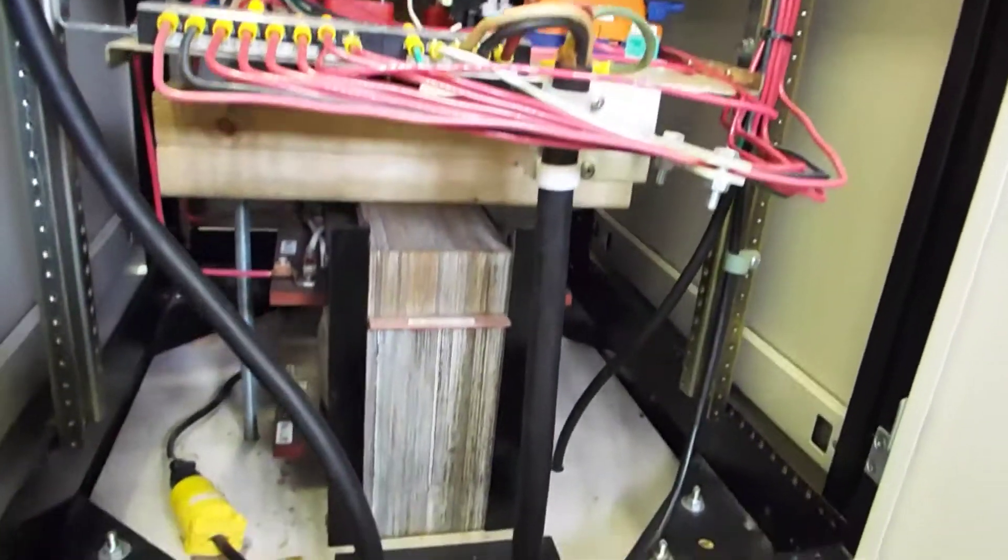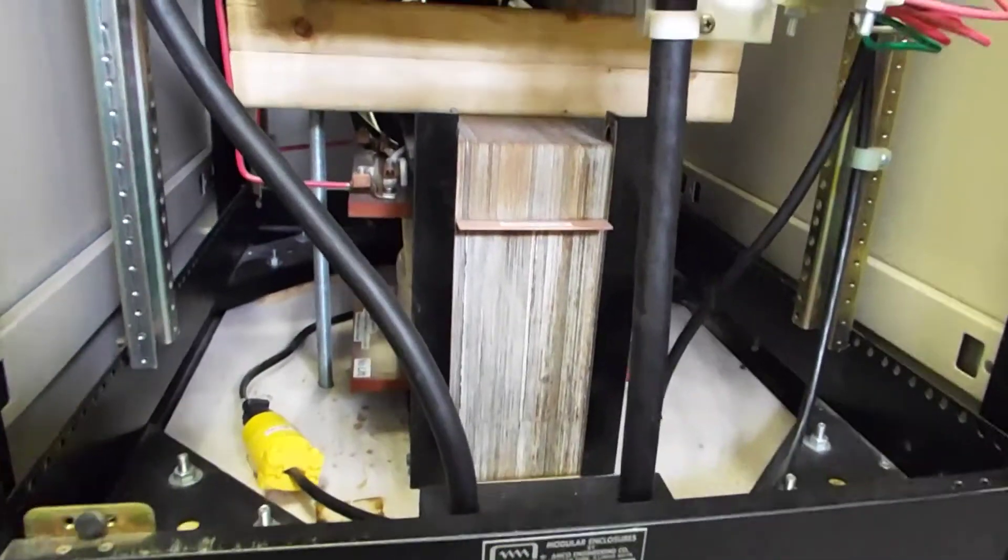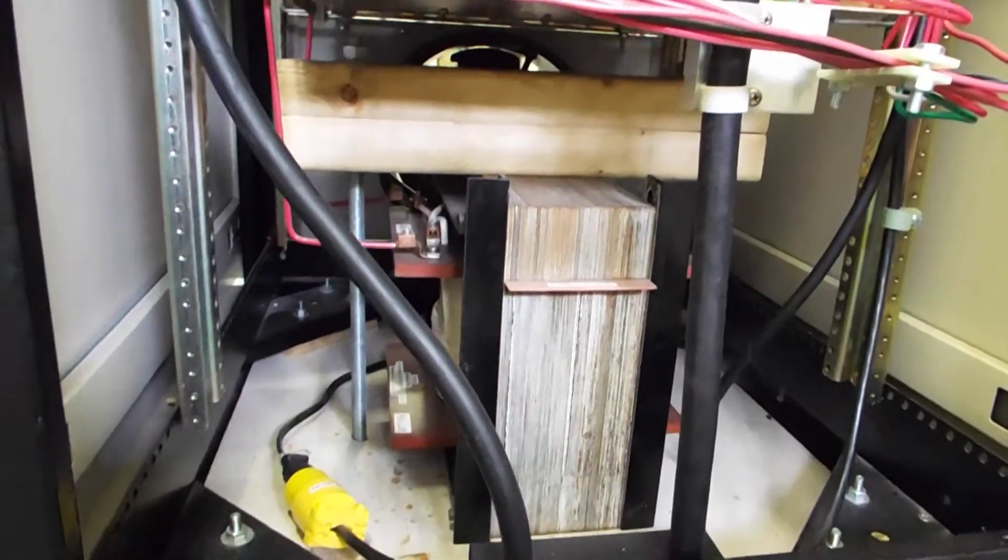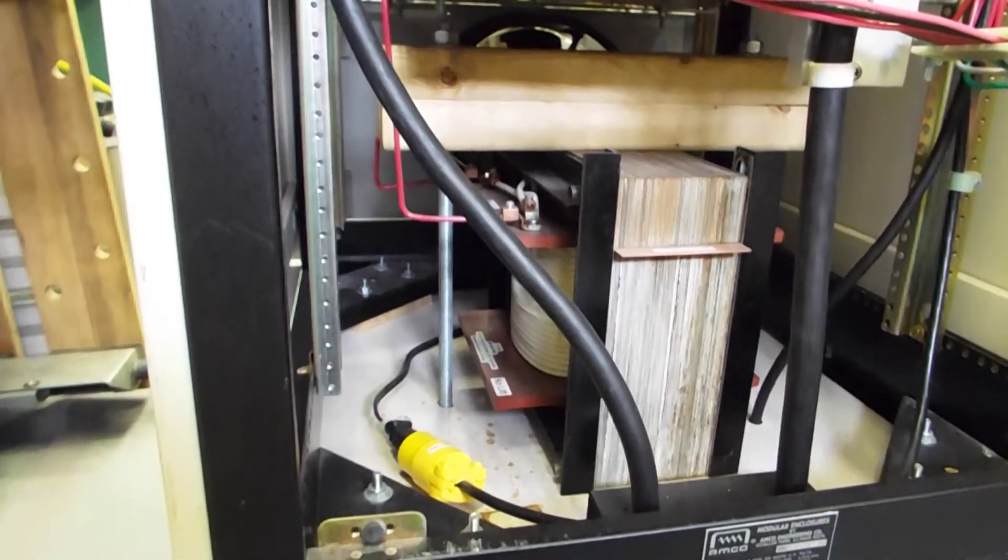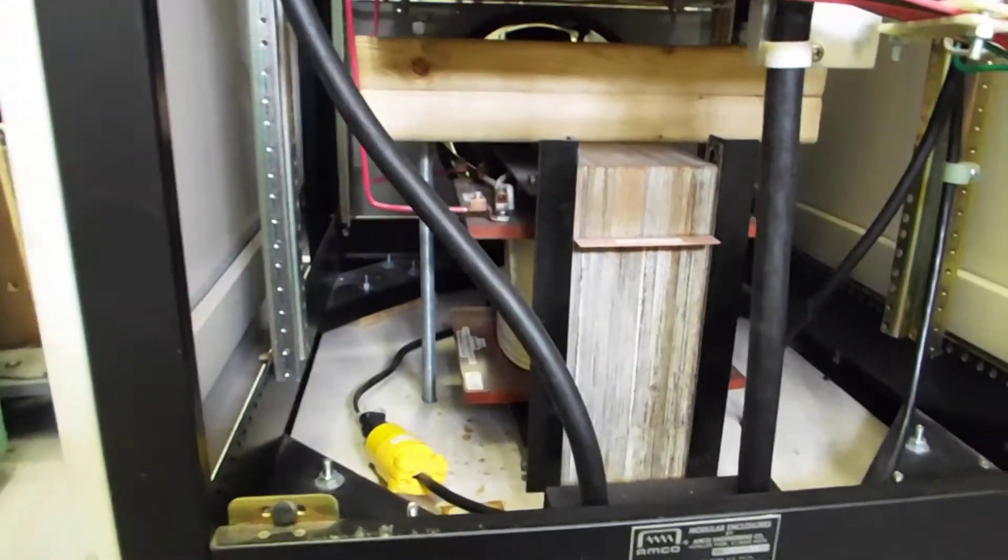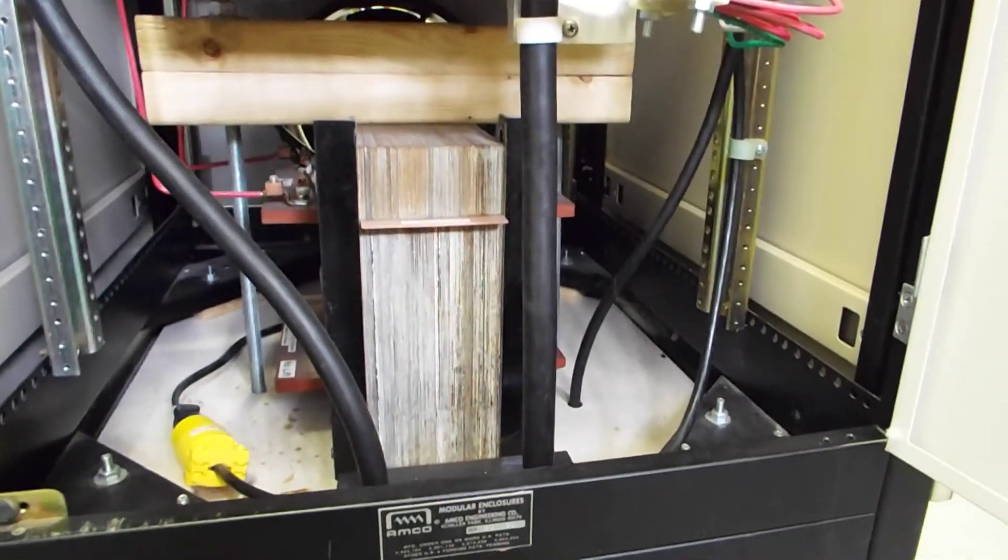And then on the very bottom level, you can see the ballast. This is an air gap ballast that I made. It weighs about 100 pounds. It's kind of hard to see from here, but it's on the very bottom because it's the most massive thing.